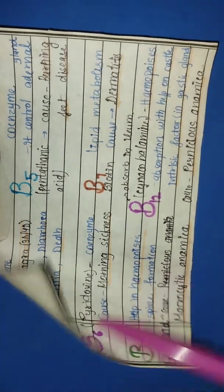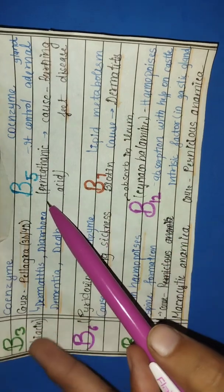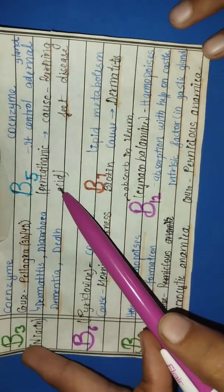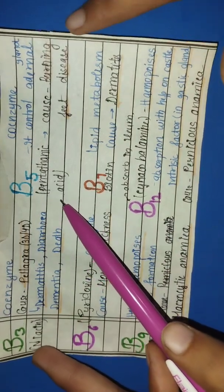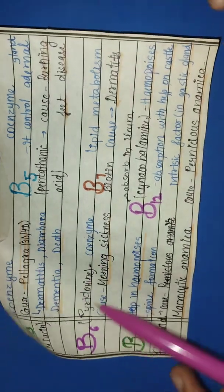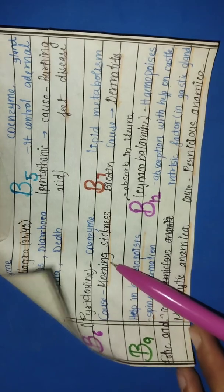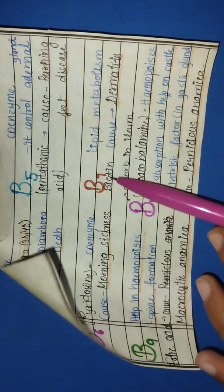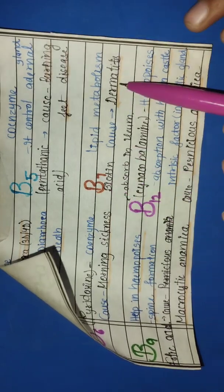Then vitamin B5, pentothenic acid. This causes burning feet disease. Next, vitamin B6, pyridoxine. This causes morning sickness. Vitamin B7, which is called biotin. This affects skin.